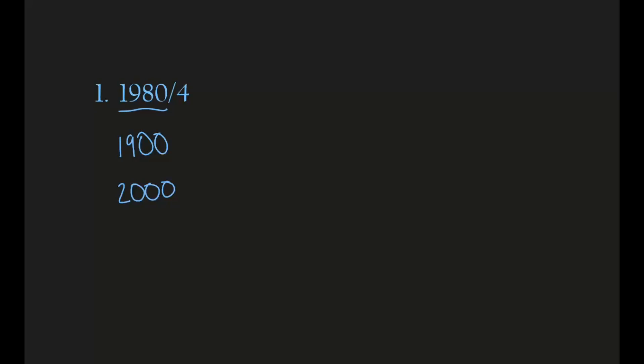We have to look at the tens place digit to find out which number it rounds to. If it's more than five, we round to 2,000. If it's equal to five, it still rounds to 2,000. If it's less than five, it rounds to 1,900. Obviously, 8 is more than five, so our rounding number is going to be 2,000.